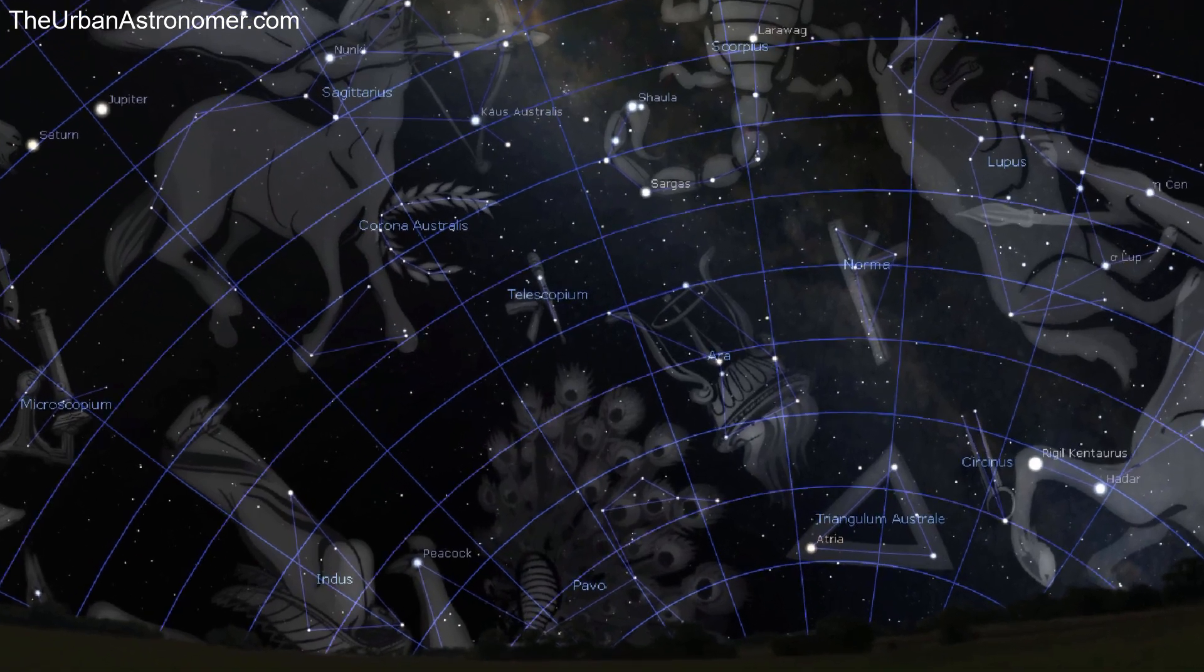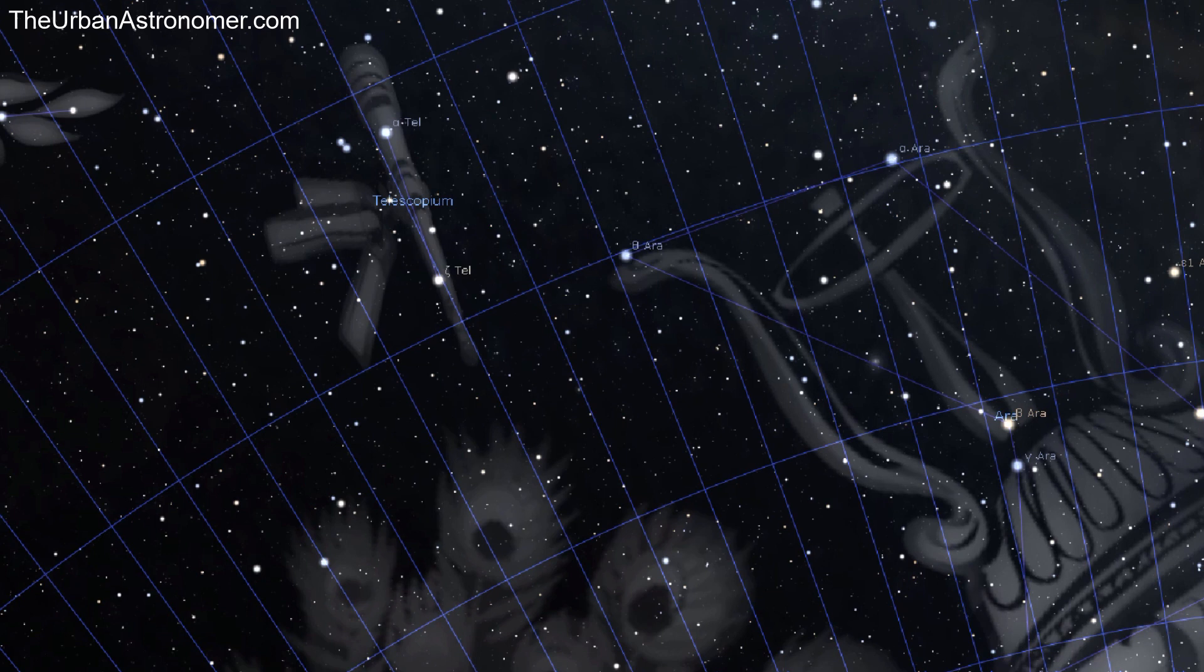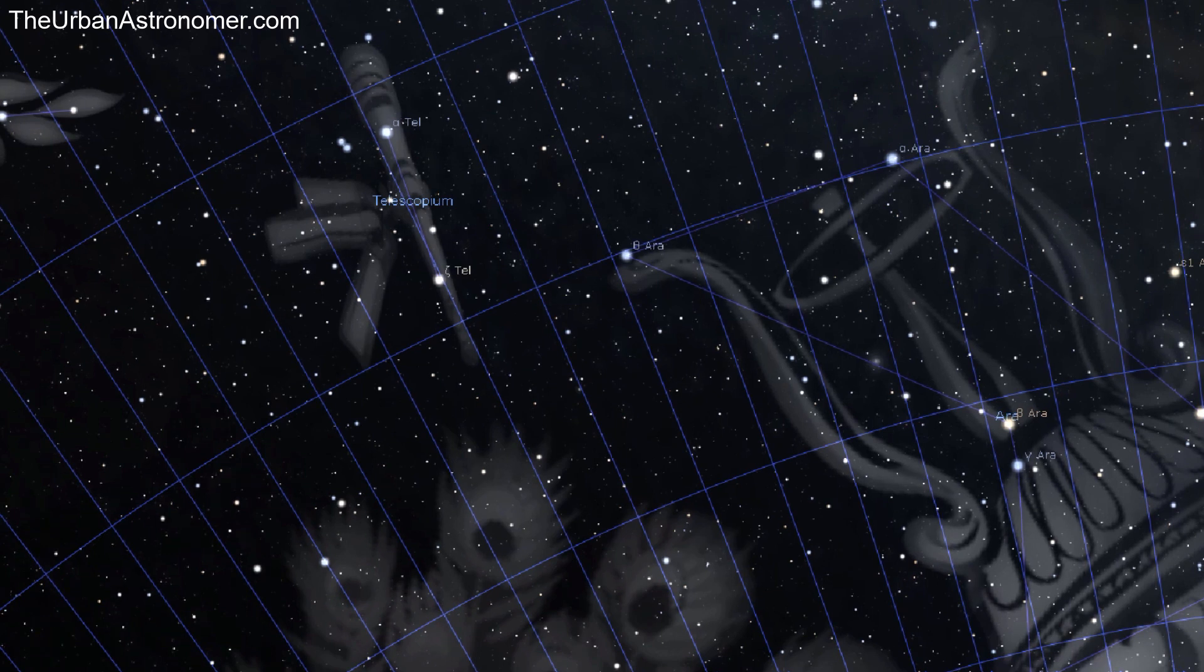The stellar mass black hole is part of a system called HR6819 which is part of the Telescopium constellation. This system is actually visible to the naked eye from dark locations in the southern hemisphere.